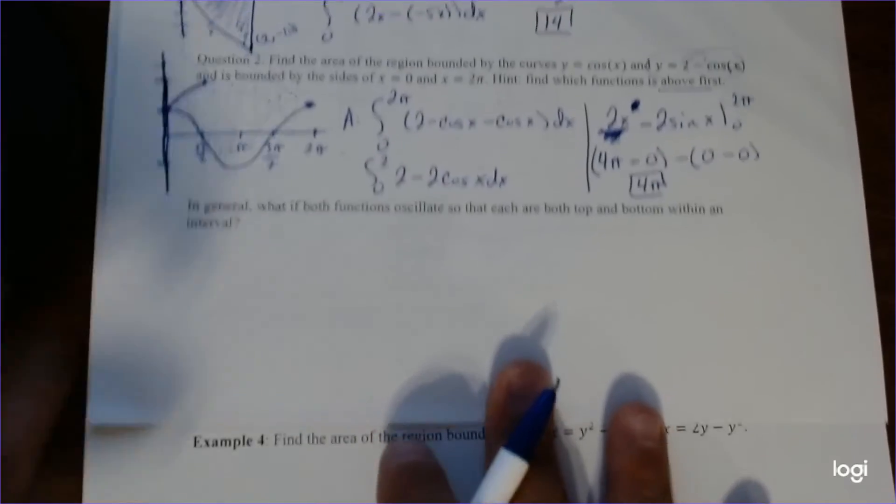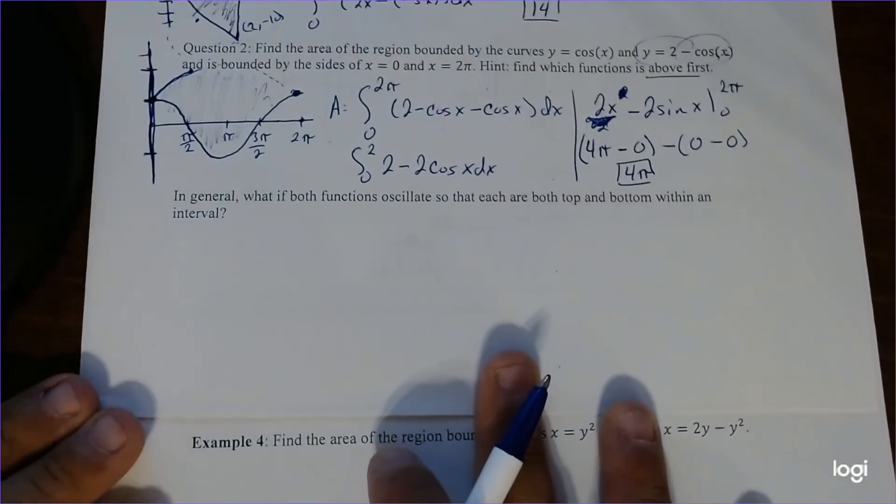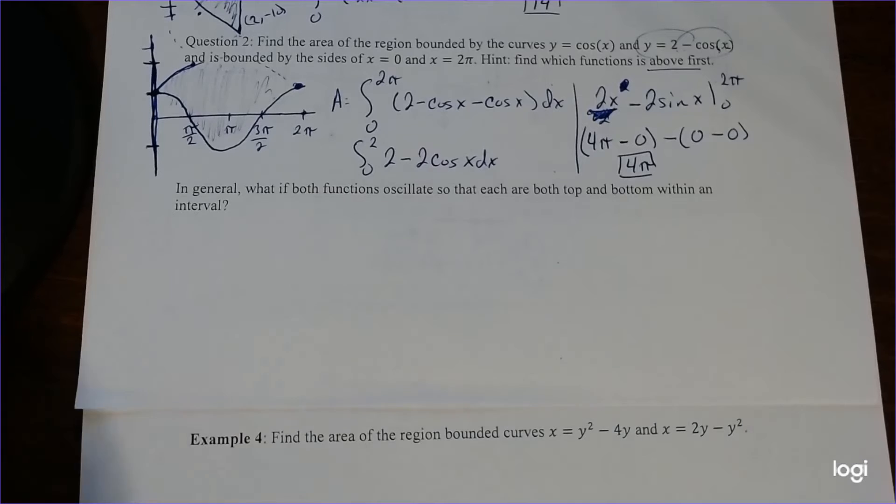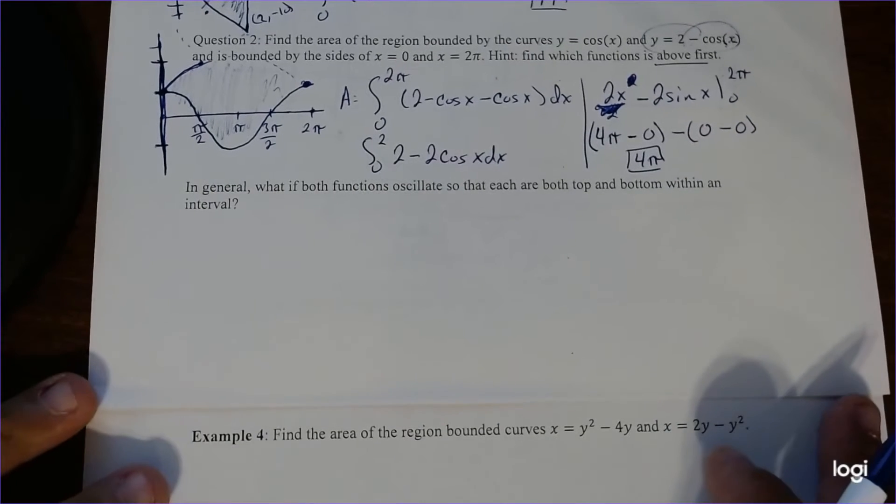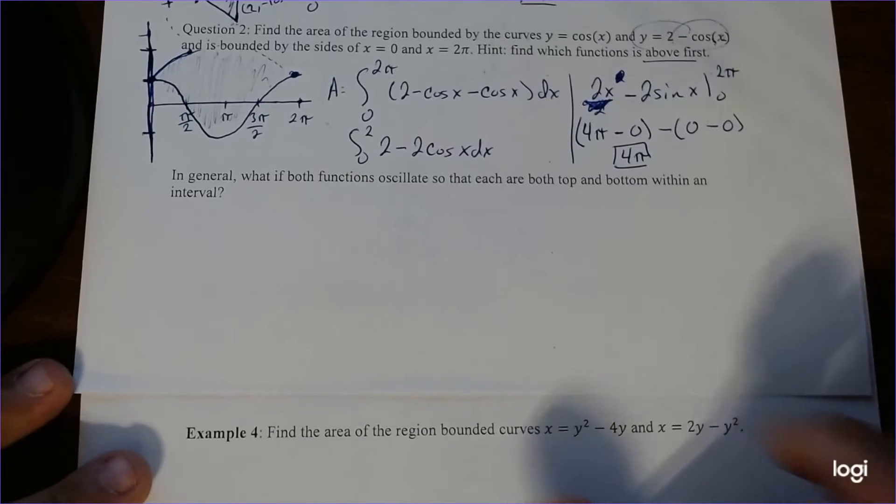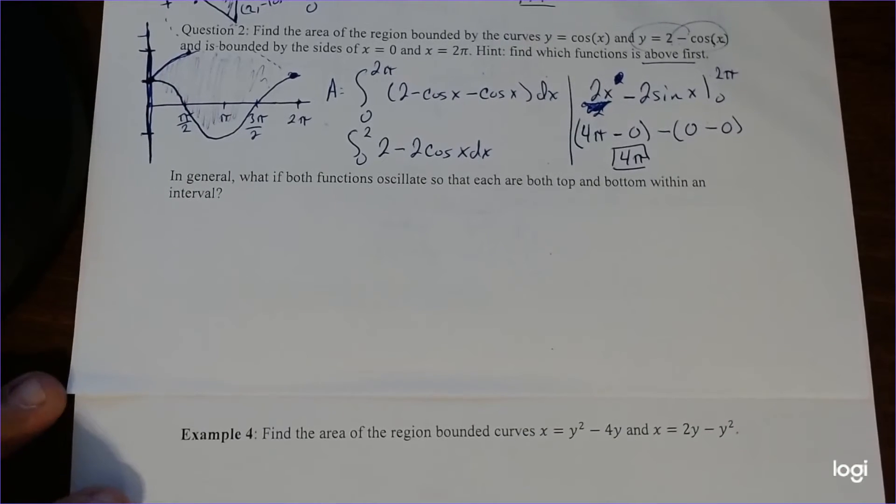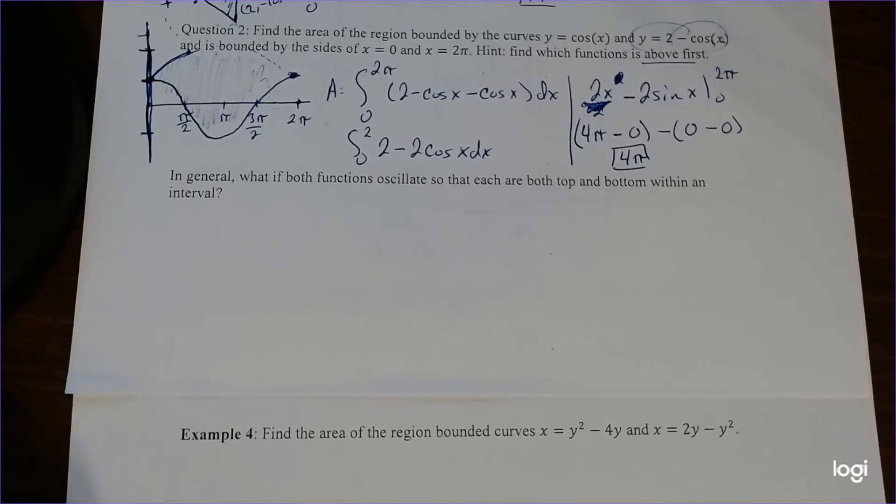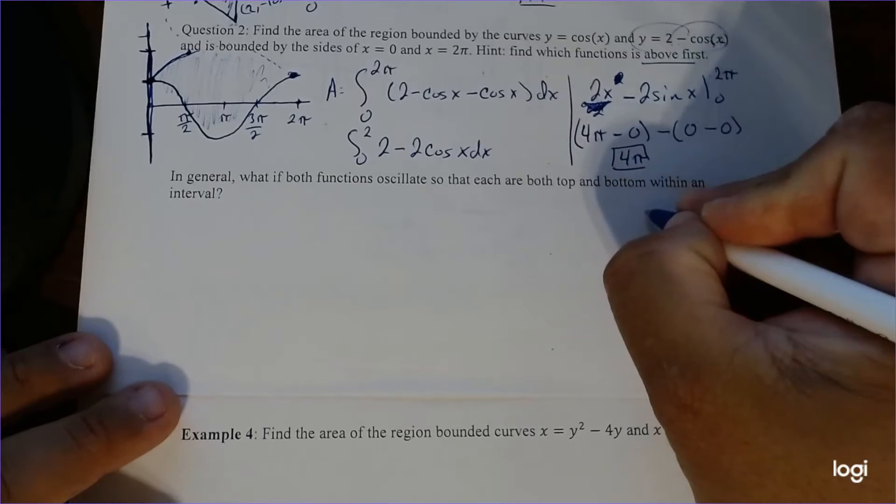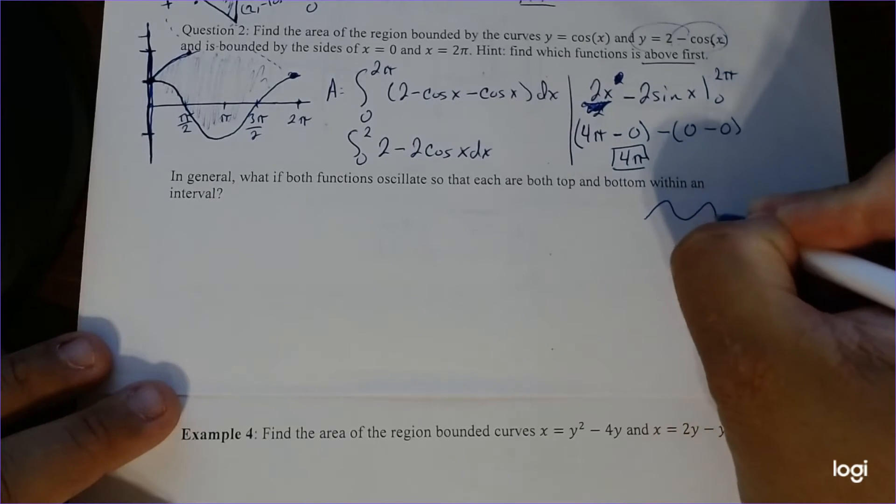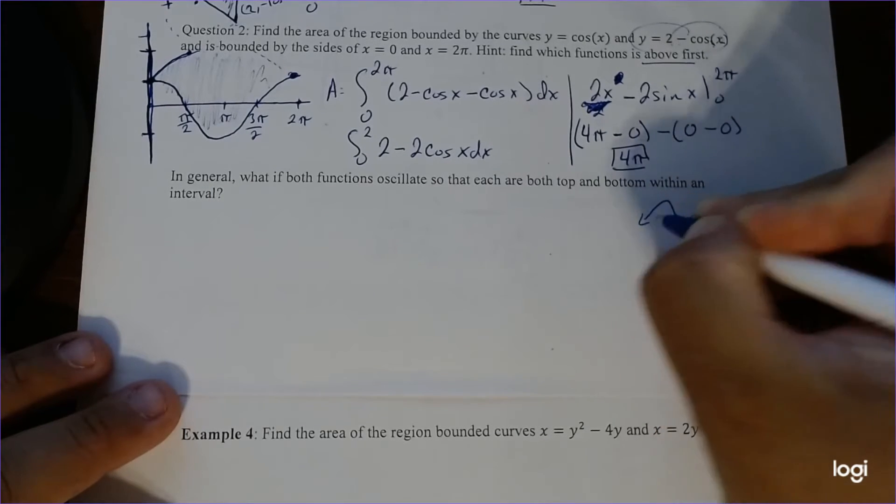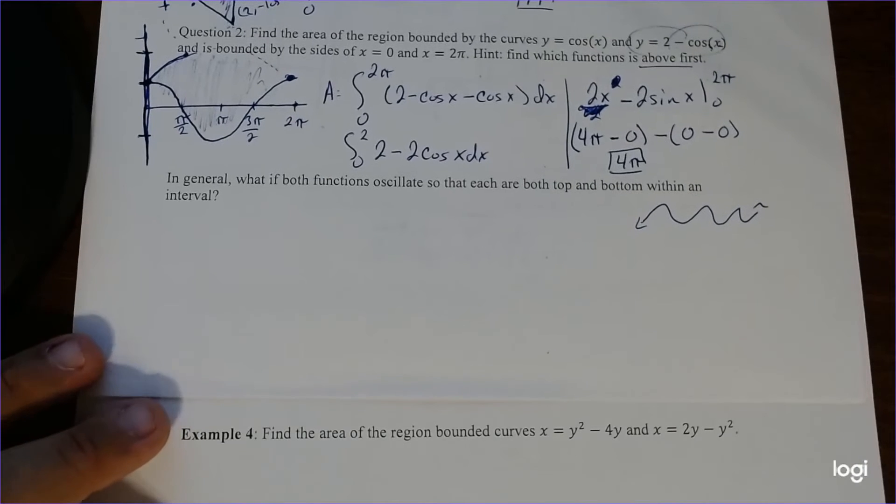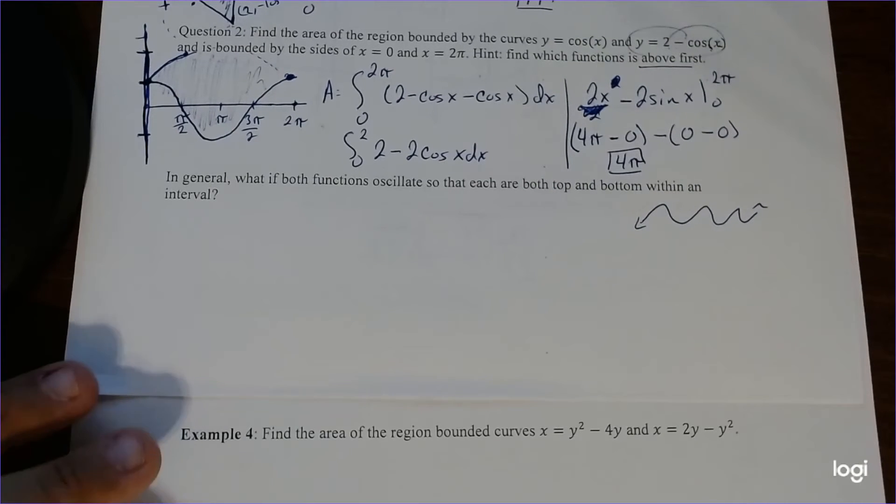Alright, so next thing we're going to talk about is, well, what if we don't know which is above and which is below? Or actually, before we do that, I want to talk about, in general, the general area between two curves. That's the very important topic when it comes into play. So, in general, if we have both functions that oscillate, so remember, oscillating means, like, you know, the cosine and sine functions? They do this. So that's oscillation. It just goes up and down, up and down with no, you know, continuous flow.